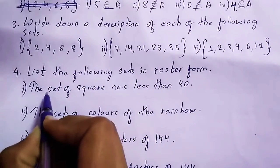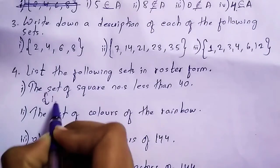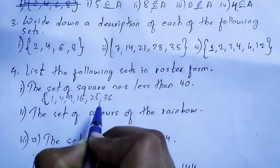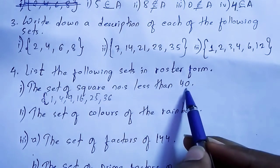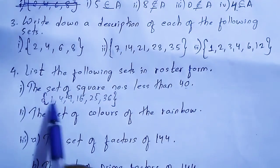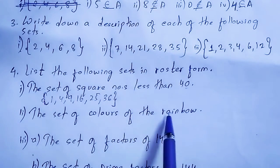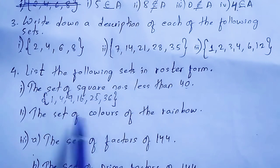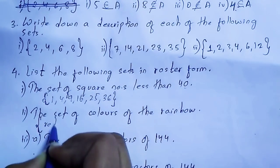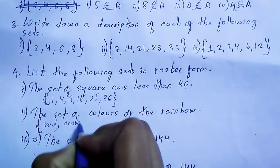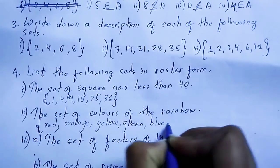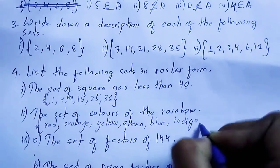Since we need square numbers less than 40, we stop at 36. So the answer is {1, 4, 9, 16, 25, 36}. Next, the set of colors of the rainbow — the rainbow has 7 colors: red, orange, yellow, green, blue, indigo, and violet.